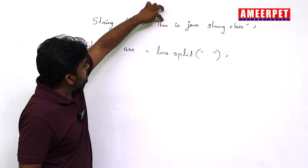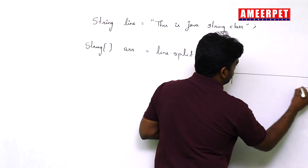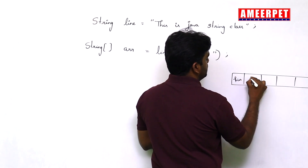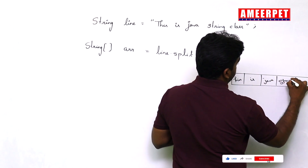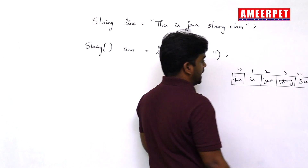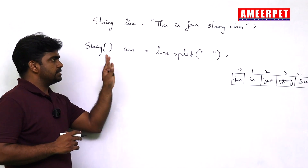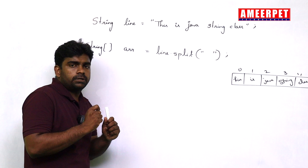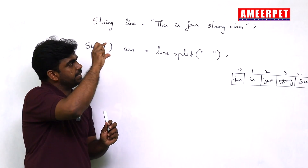The first word goes into the first location. So: 'this' is java string class — index 0, 1, 2, 3, 4. We access them with an index. Now the question is what this array contains after the split.